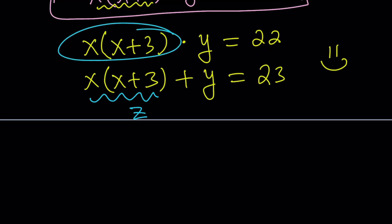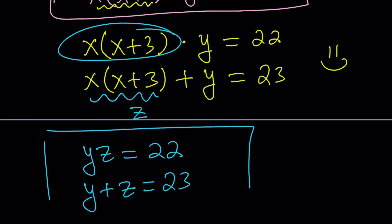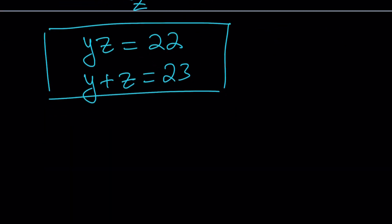So from the first equation, this is also z, by the way. First equation gives us yz equals 22. I'm kind of obsessed. I need to write everything in alphabetical order most of the time. And then y plus z is 23. This is one of the nicest systems that you can get besides y plus z and y minus z, which is never going to happen, by the way. But anyways, this is pretty easy.